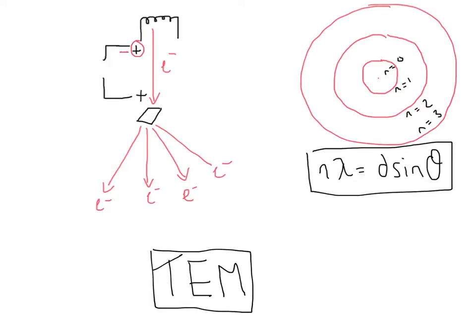So you get this circle sort of shape, and you get your n equals 0, n equals 1, n equals 2, n equals 3, just the same. So obviously you need to be able to work out what your angle is. So one of the things you can do is you measure the radius of one of your circles, and you measure the distance from the screen to the sample, and using a cunning bit of trigonometry, you can work out what the angle is, and then you can work out all sorts of cool things.